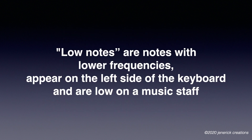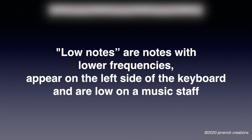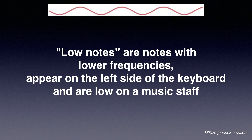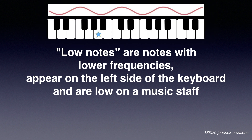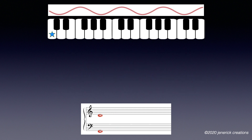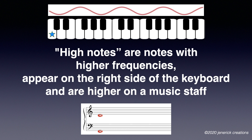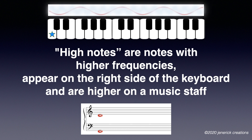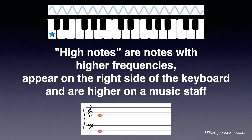Low notes are notes with lower frequencies, appear on the left side of the keyboard, and are low on the music staff. High notes are notes with higher frequencies, appear on the right side of the keyboard, and are higher on a music staff.